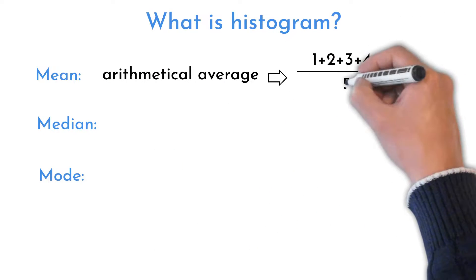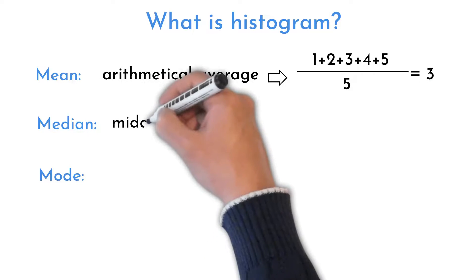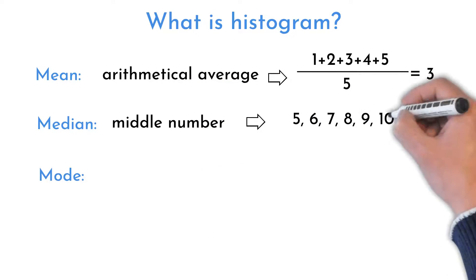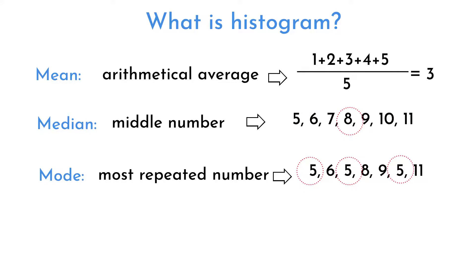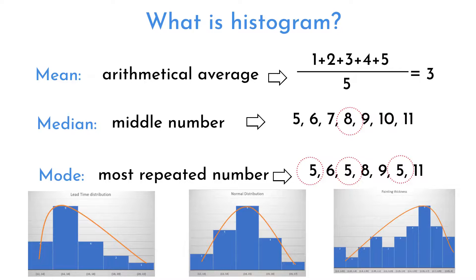Mean is an arithmetical average of all values. Median is a middle number of all values. Mode is the most frequent occurring number. Relationship between median, mode, and mean can help us predict histogram shape.